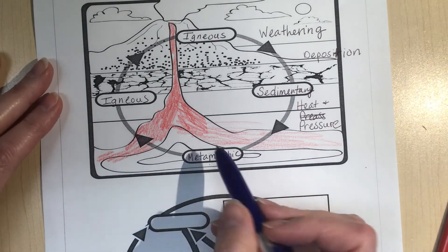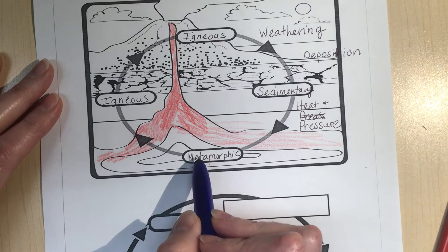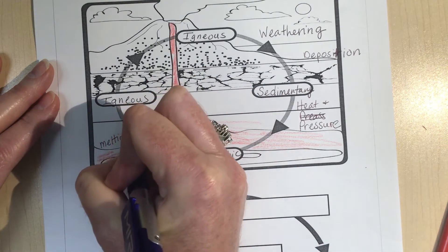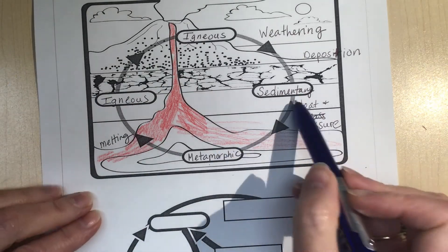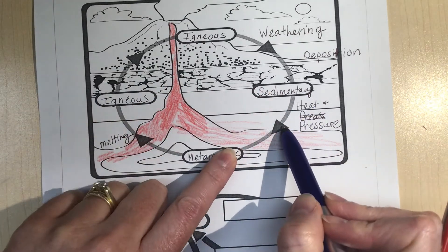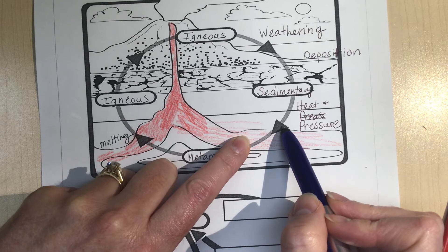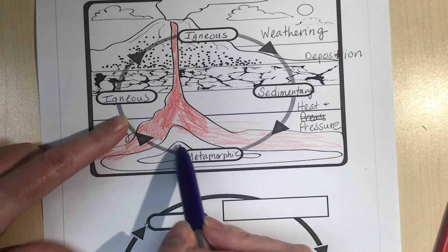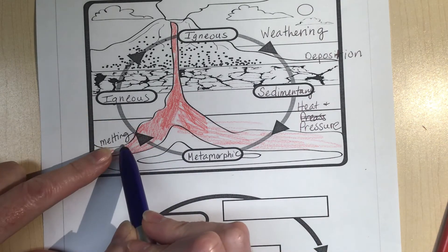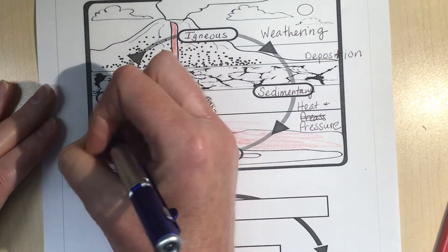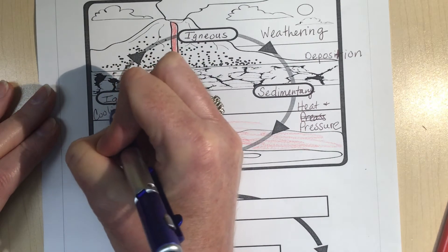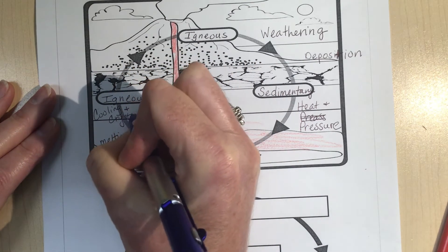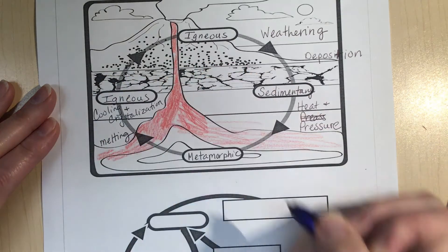All right, so the metamorphic rock goes through melting to turn back into igneous. So heat and pressure, and if the plates and the earthquakes move and this metamorphic rock ends up getting close to a heat source, it can melt and then it can cool and crystallize into igneous rock.